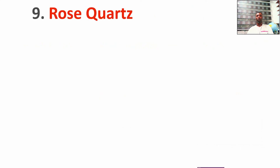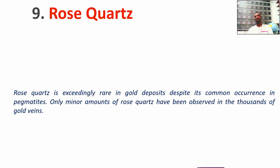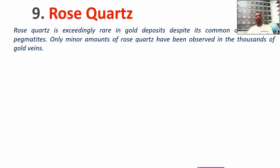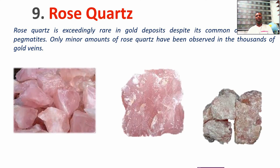Rose quartz appears very interesting with nice coloring, and it can be another source of lithium deposits — it may contain some lithium. From what I've seen, they occur within pegmatized veins and pegmatized rock deposits. However, they are not really a good variety when it comes to gold mapping. You need to understand that rose quartz is not one of the best to look at for gold.